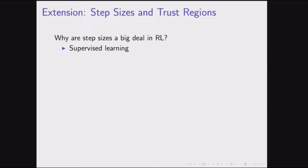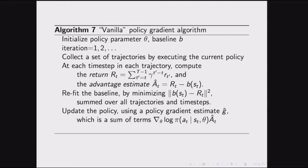Here's the vanilla policy gradient algorithm. Initialize your policy parameters and baseline function. For each iteration: execute the current policy to collect complete episodes (whole trajectories). At each time step in each trajectory, compute the return (discounted sum of future rewards) and the advantage estimate (return minus baseline). Then refit the baseline by making it equal the returns. Update the policy using a policy gradient estimator — essentially SGD while updating the baseline as you go.